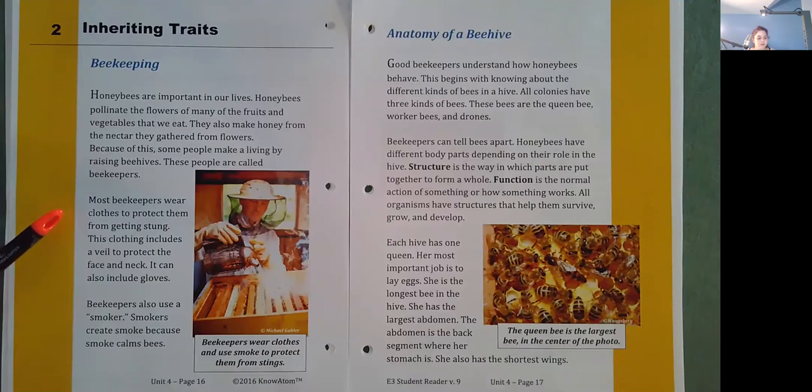Most beekeepers wear clothes to protect them from getting stung. This clothing includes a veil to protect the face and neck. It can also include gloves. Beekeepers also use a smoker. Smokers create smoke because smoke calms bees.